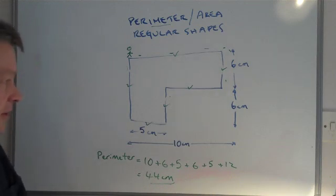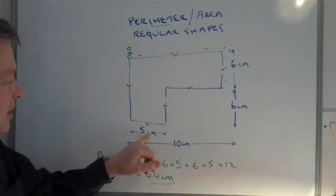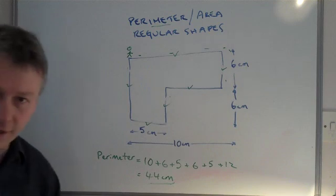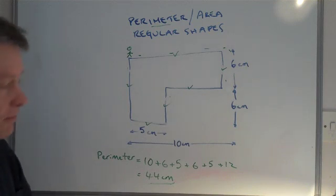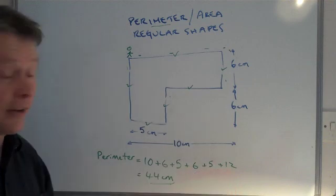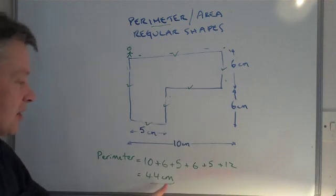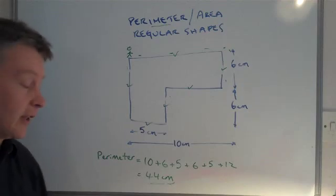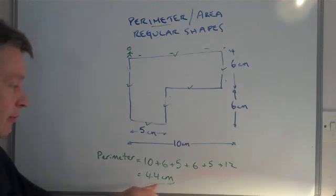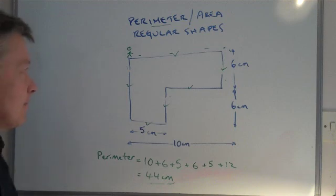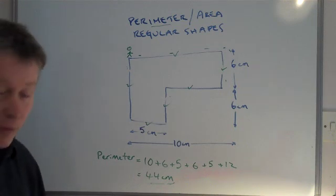A couple of things you might want to be aware of is that occasionally you might get slightly different units of measurements — sometimes metres, sometimes centimetres, sometimes millimetres. When you're adding all of these together, you need to make sure that it's the same unit. And also you will gain a mark on the exam, usually for making sure that you put in the correct unit of measurements. So that will take care of perimeter.